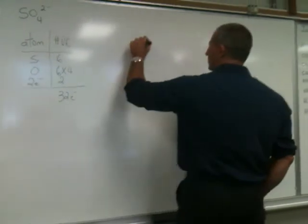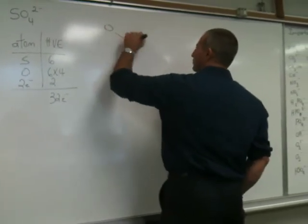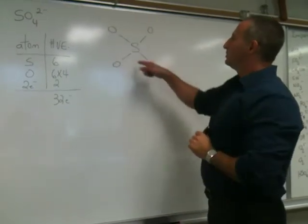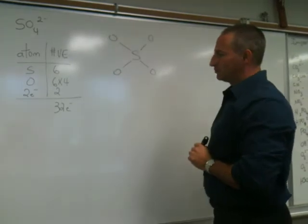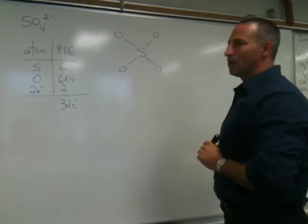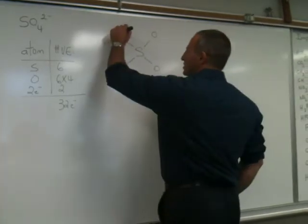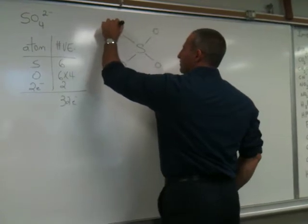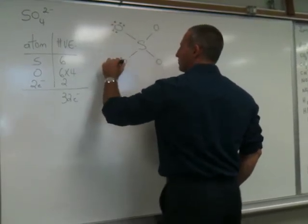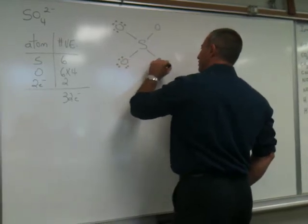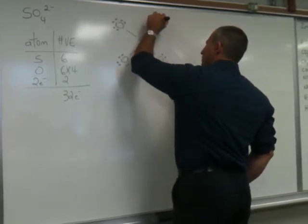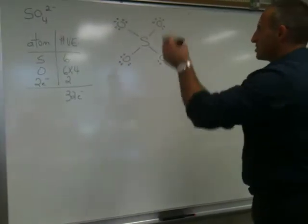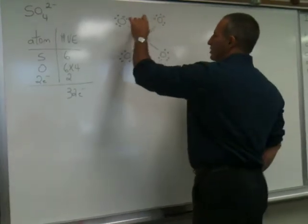So we begin by drawing our preliminary structure, sulfur at the center, oxygen atoms as satellites. That uses up 8 electrons already. So that leaves us with 24 electrons to scatter among 4 atoms. We're going to put 6 on each oxygen atom. So we're going to draw them in a circle so you can see them. That uses up 32 electrons.